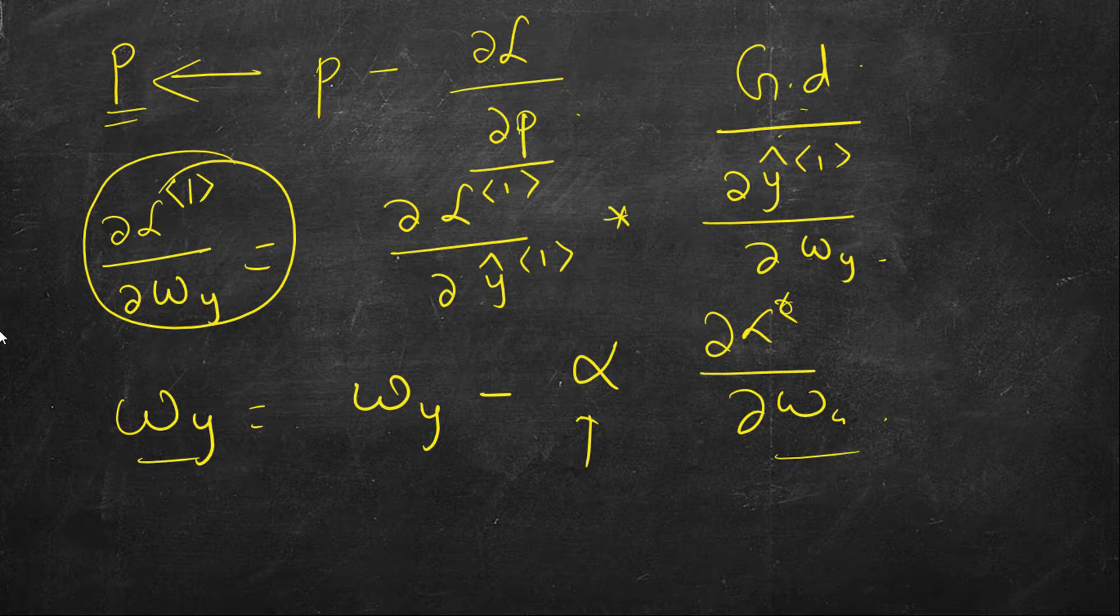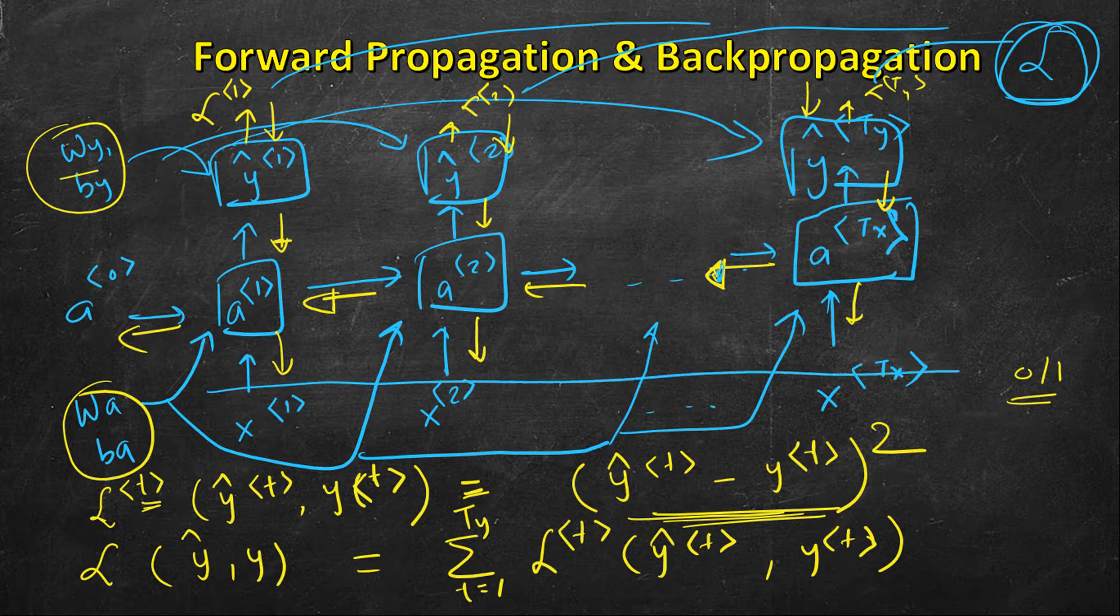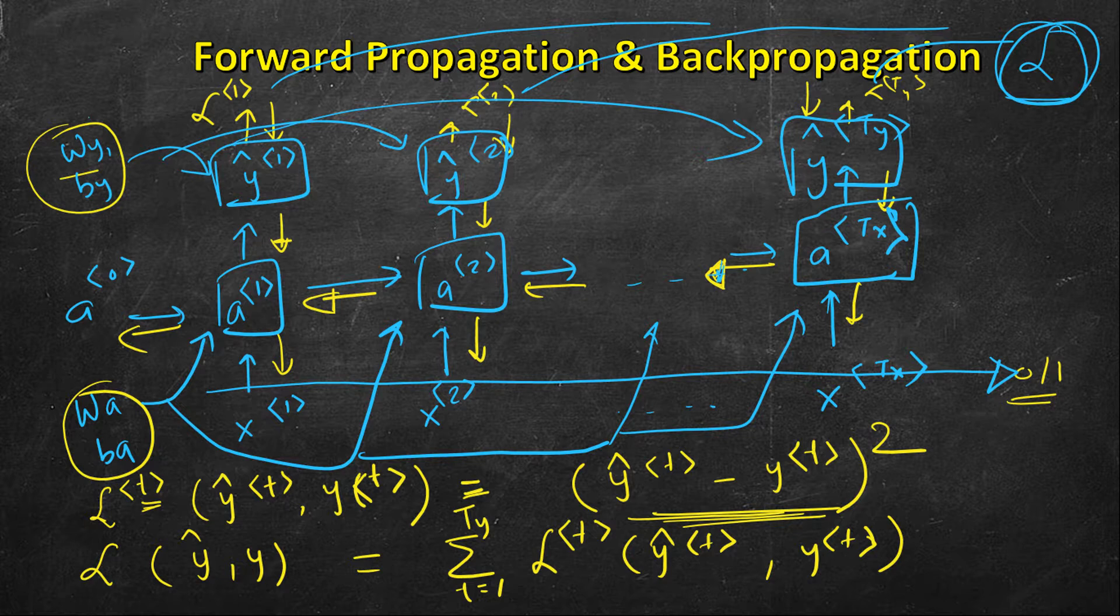Now why is it called backpropagation through time? The most important update among these calculations is the right-to-left calculations. In the forward pass, we are processing the words from left to right in the computation graph. We are going from left to right in increasing time stamps: one, two, three, four. In the backpropagation, we are going in reverse direction, so we are going backward in time. That's why it's given the name backpropagation through time.